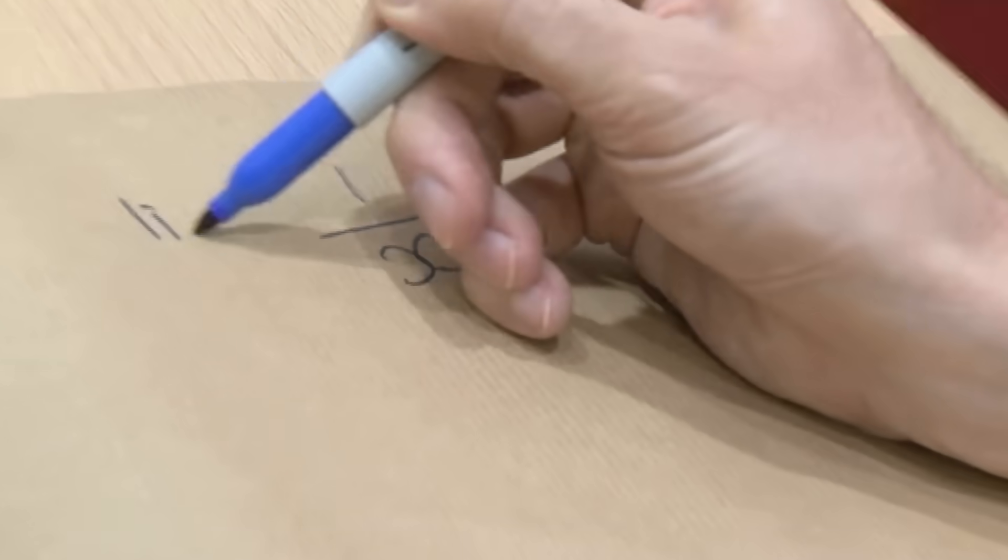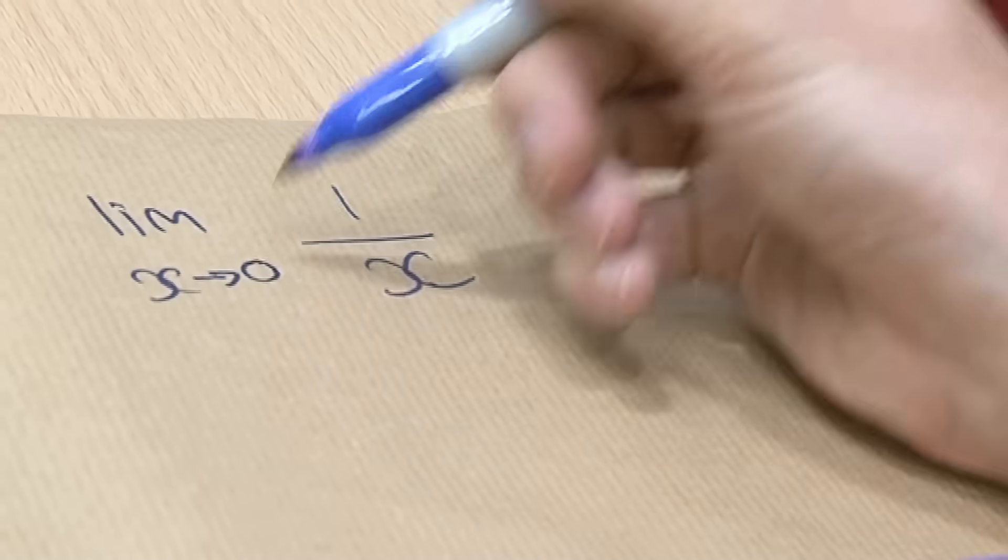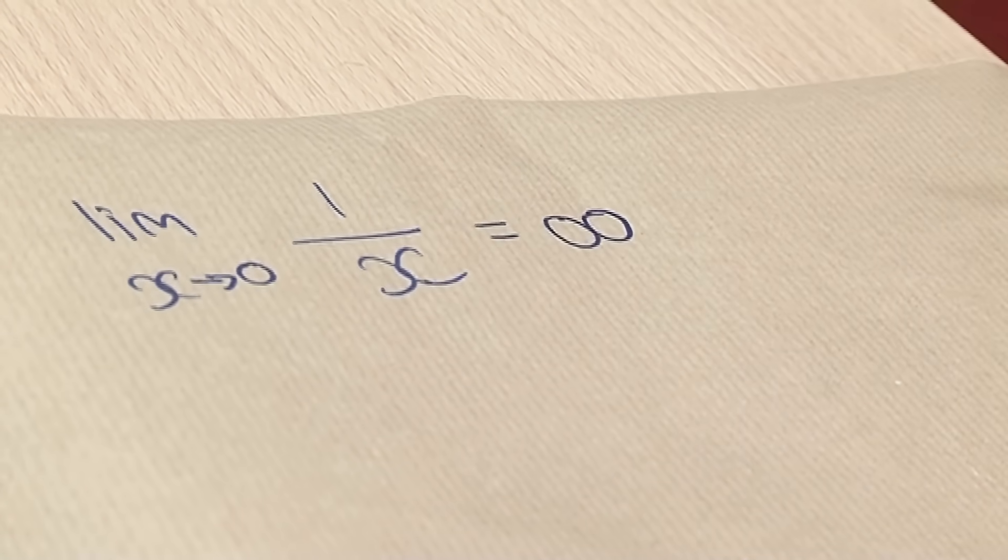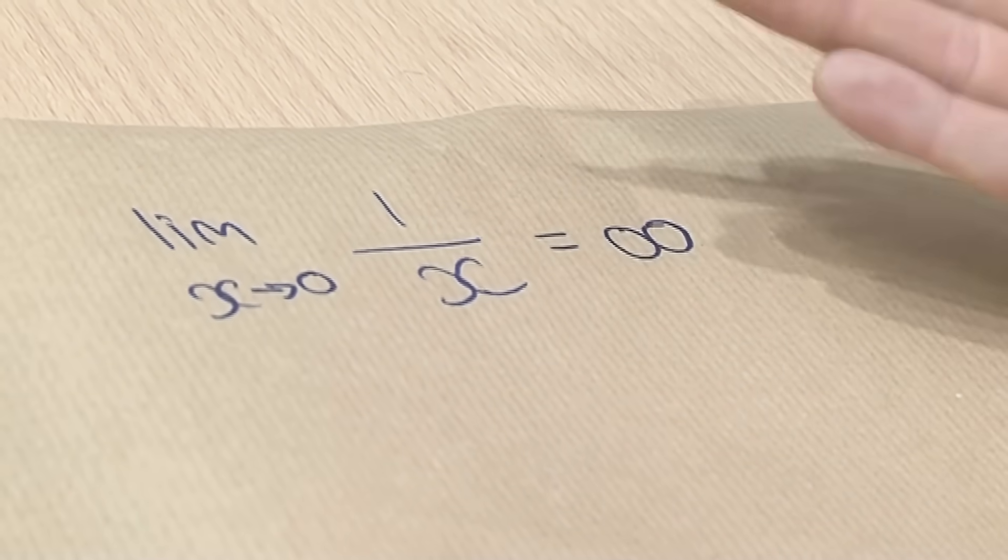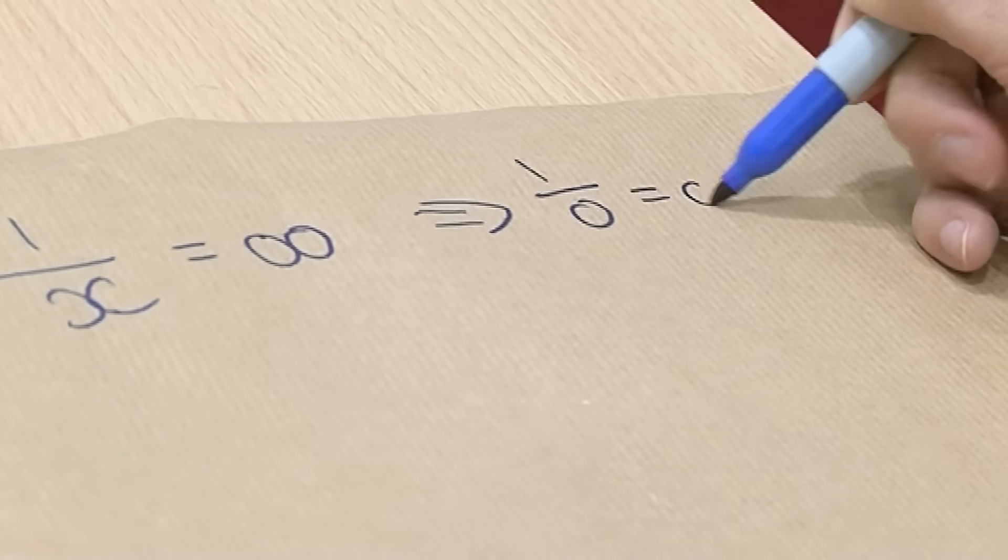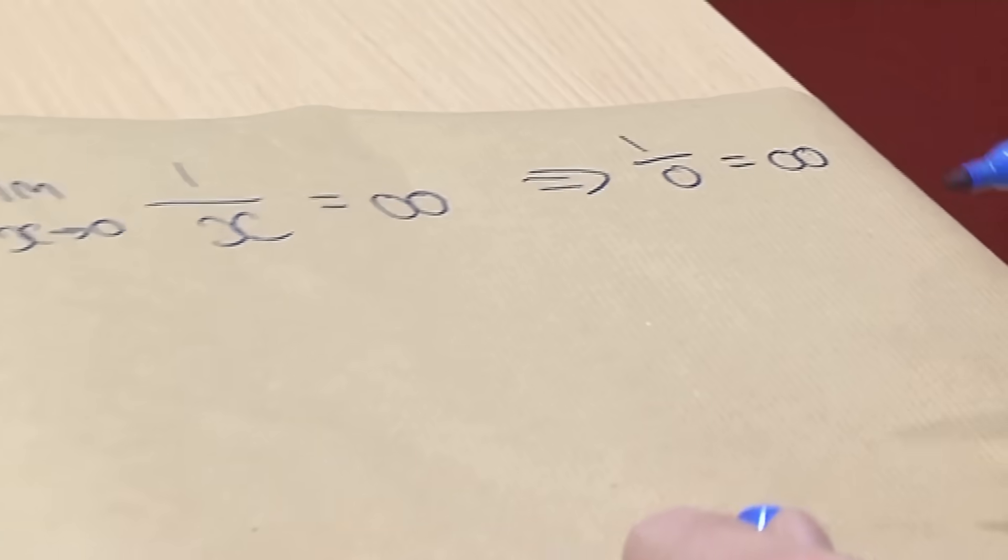You're going to get nonsense like 1 equals 2. But they say, what if you take a limit? What if you just take the limit as x gets really close to zero? Doesn't this equal infinity? And so you would say that actually dividing by zero, you could therefore conclude that 1 divided by 0 equals infinity. And I'm going to show you why you can't do that.